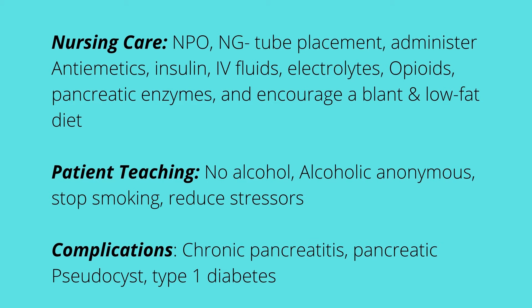Complications of pancreatitis include type 1 diabetes, because type 1 diabetes is when the patient does not have any insulin production, and when we are auto-digesting the pancreas which produces insulin, we won't have any insulin. We could also end up with chronic pancreatitis and pancreatic pseudocysts.